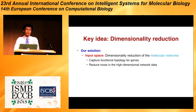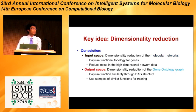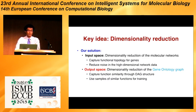The key idea of our method is to do dimensionality reduction on both the input space and output space. By doing dimensionality reduction on the molecular networks, we can capture the topological structure for genes. Genes that are close to each other in the molecular network will have a very similar low-dimensional vector representation, reducing the noise in the high-dimensional network data. We also propose to do dimensionality reduction on the output gene ontology space. Functions that are similar to each other in the gene ontology graph will also get a similar low-dimensional vector representation, so we can use training samples of similar functions to help predict those sparsely annotated functions and alleviate overfitting.